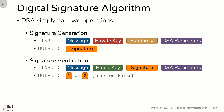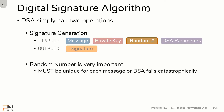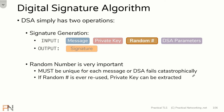There's something important about the DSA algorithm: the random number. That random number is very important. It must be unique for every single message you're trying to sign, or DSA will fail catastrophically. If you reuse the same random number on two different messages, you can compare the signatures of both messages and extract the private key — which is really bad. That's why DSA fails catastrophically if you don't use unique random numbers.